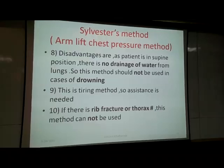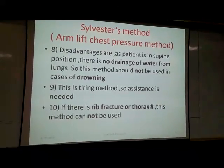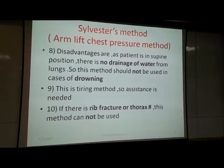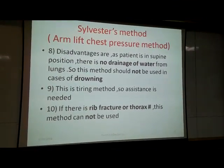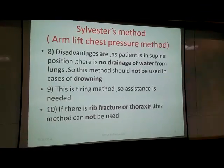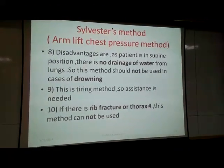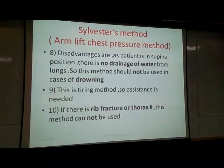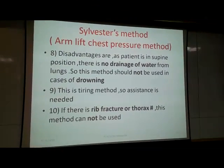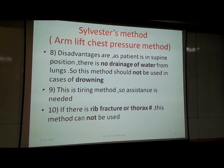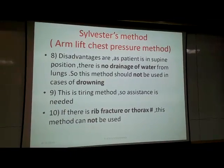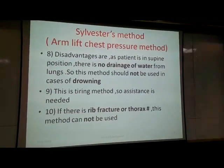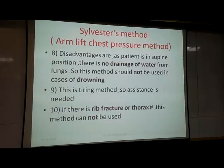Disadvantages: the patient is in supine position so there is no drainage of water from the lungs. This method should not be used in cases of drowning. In drowning, use Schaeffer's method or Holger-Nelson method, not Sylvester's method. Sylvester's method is also a tiring method so assistance is needed. If there is a rib fracture or thorax fracture, this method cannot be used.